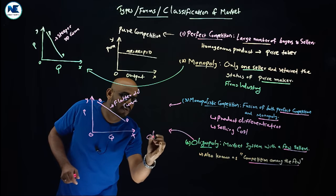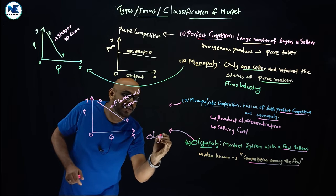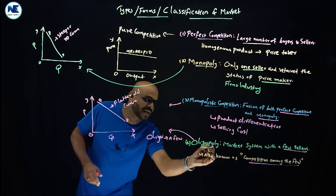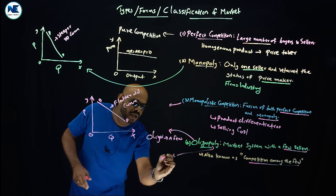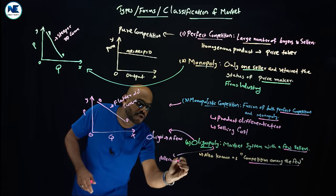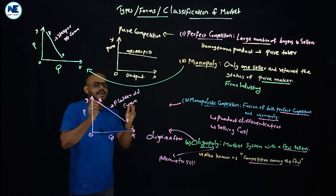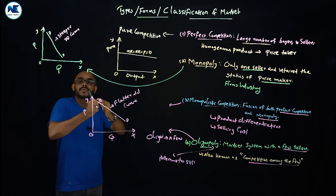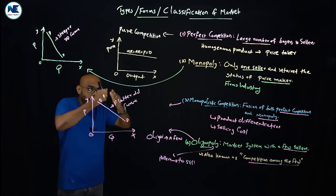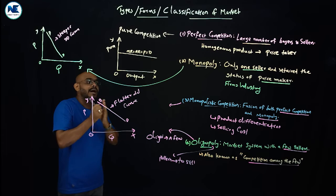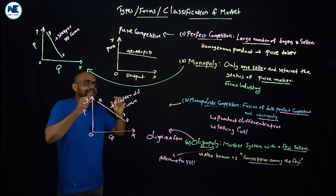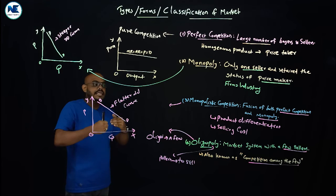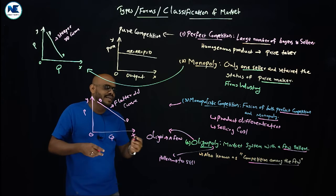The term 'oligo' is a Greek word, and 'polein' (p-o-l-l-e-i-n) is the Greek word meaning 'to sell.' So oligopoly is the market situation where we can see competition among the few sellers. The kinked demand analysis, developed by American economist Paul Sweezy, is an important concept used to explain oligopoly behavior.